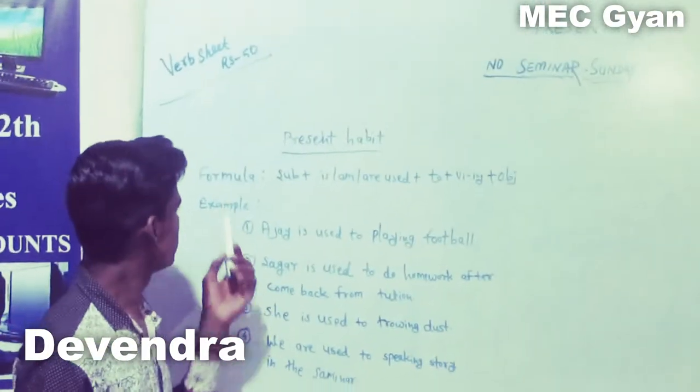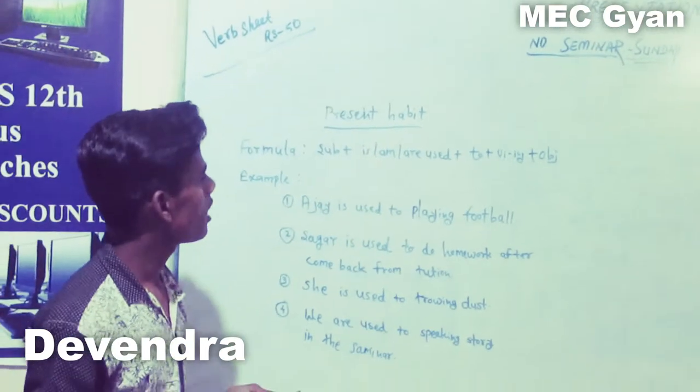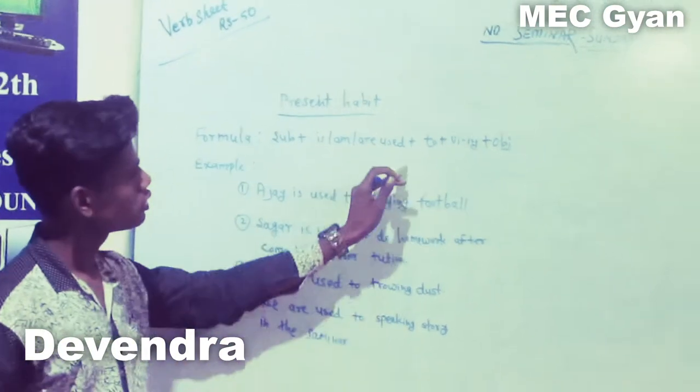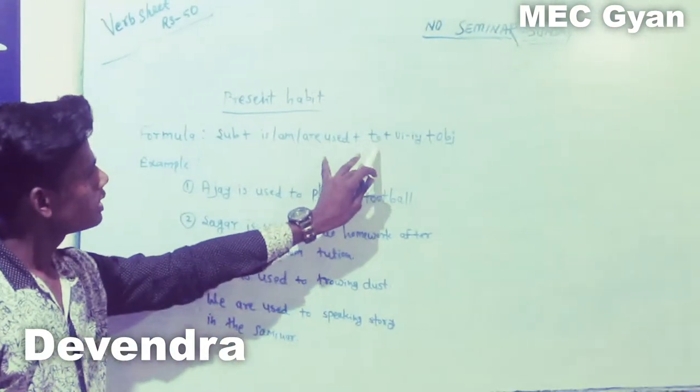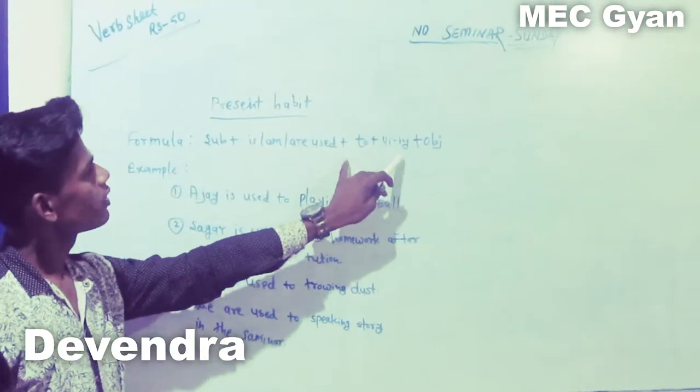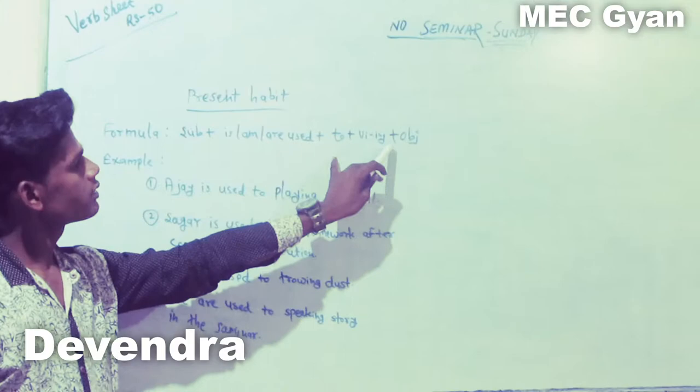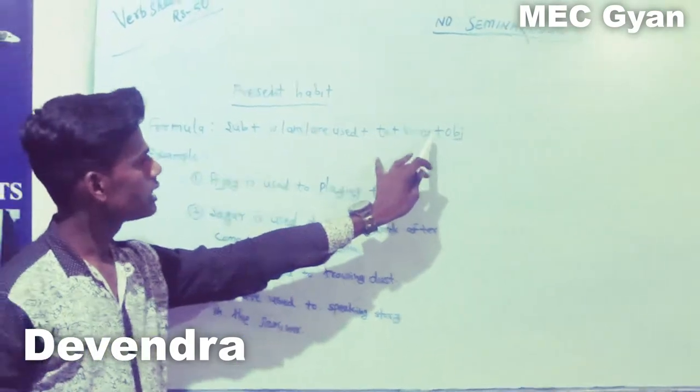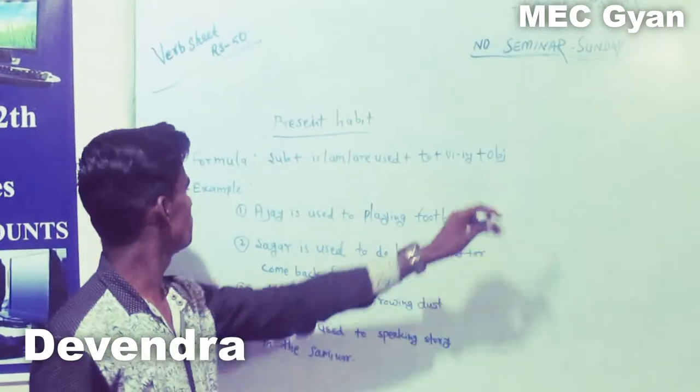So here is the formula: subject plus is/am/are plus used to plus verb's first form with -ing plus object.